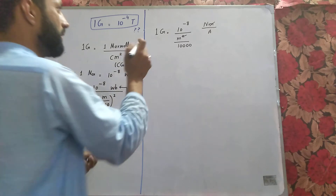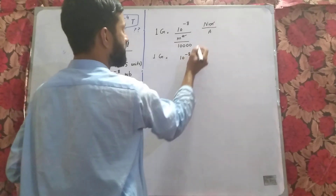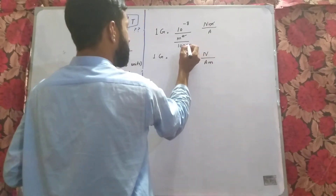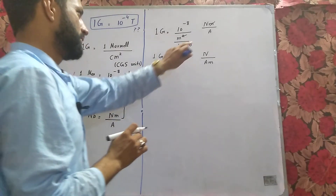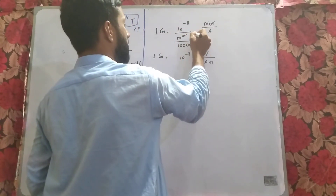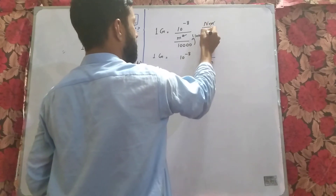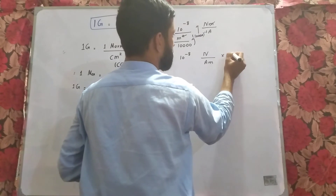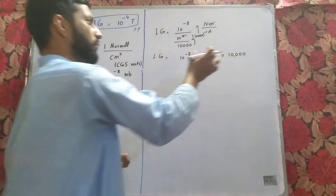Writing this in powers of 10, we get 10 raised to power minus 8 and the result becomes Newton per ampere per meter. Moving terms from division to multiplication changes the exponent signs accordingly, giving us Newton per ampere times meter to the power minus 1.